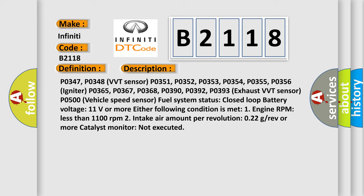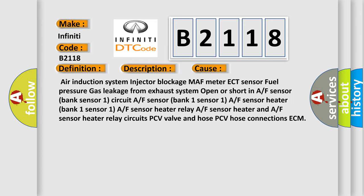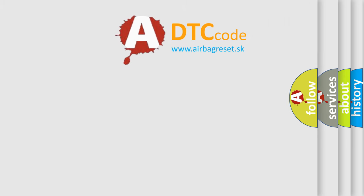The following condition must be met: engine RPM less than 1100 revolutions per minute, intake air amount per revolution 0.22 g/rev or more, and catalyst monitor not executed. This diagnostic error occurs most often due to: air induction system issues, injector blockage, MAF meter, ECT sensor, fuel pressure, gas leakage from the exhaust system, open or short in AF sensor Bank 1 Sensor 1 circuit, AF sensor Bank 1 Sensor 1, AF sensor heater Bank 1 Sensor 1, AF sensor heater relay, PCV valve and hose, PCV hose connections, or ECM.